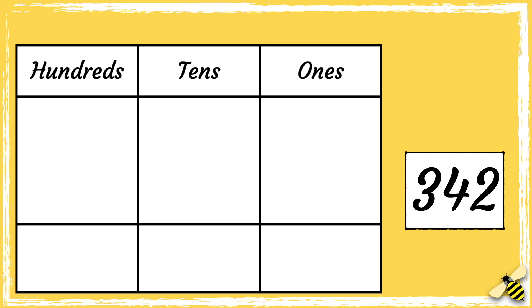Here is a number: three hundred and forty-two. How would this number look on a place value grid? Pause the video to give you time to work out the answer. Press play when you're done.